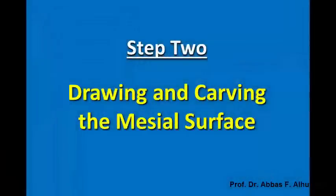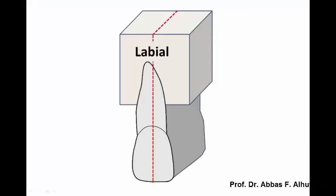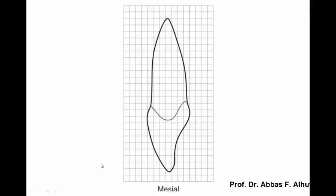Step 2: Drawing and carving the mesial surface. After obtaining this block, we draw a line on the mesial surface, bisecting the block into two equal halves. The line here will penetrate the tip of the root and the incisal edge.